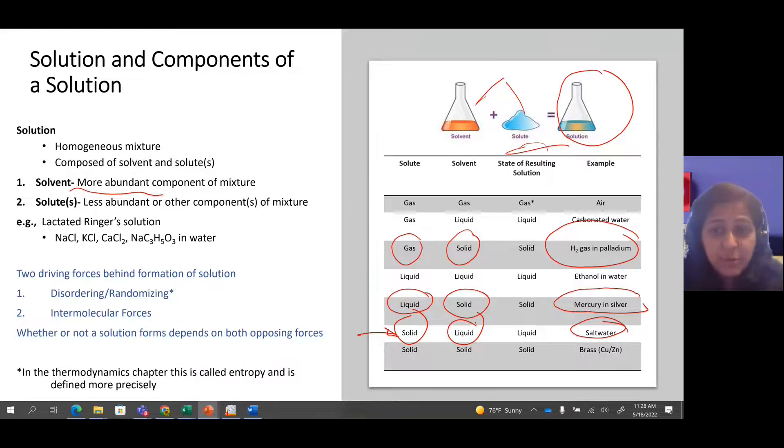The solvent doesn't have to be a liquid always. The solvent is the one with the larger amount. The solute is the one with the smaller amount. That is how we define a solvent and a solute. Combining the solute and the solvent makes a homogeneous mixture. That homogeneous mixture is known as the solution.